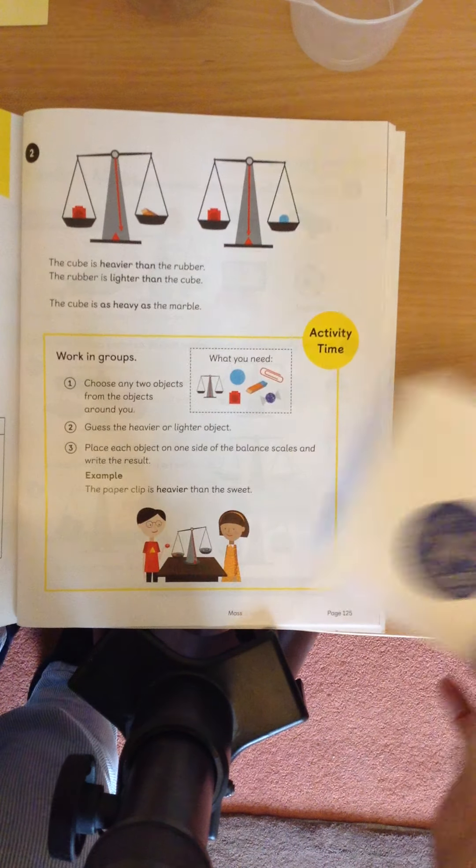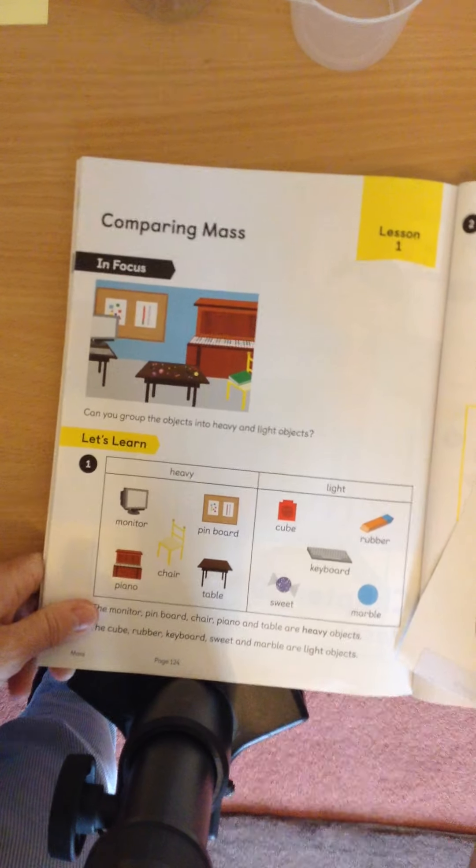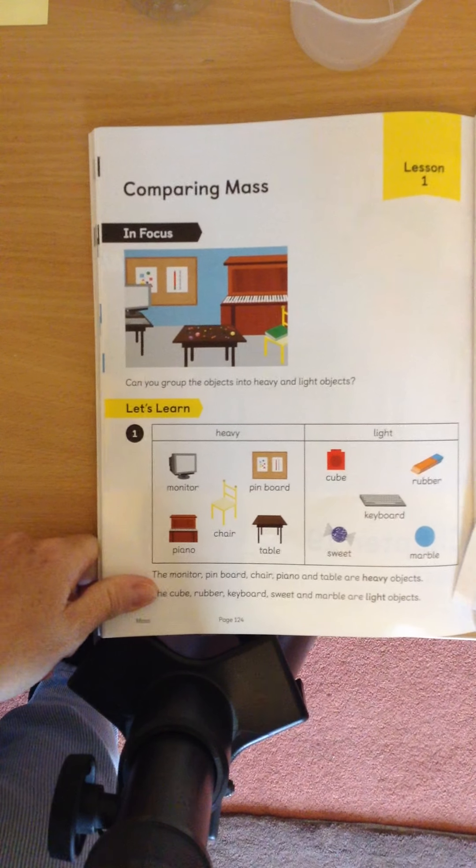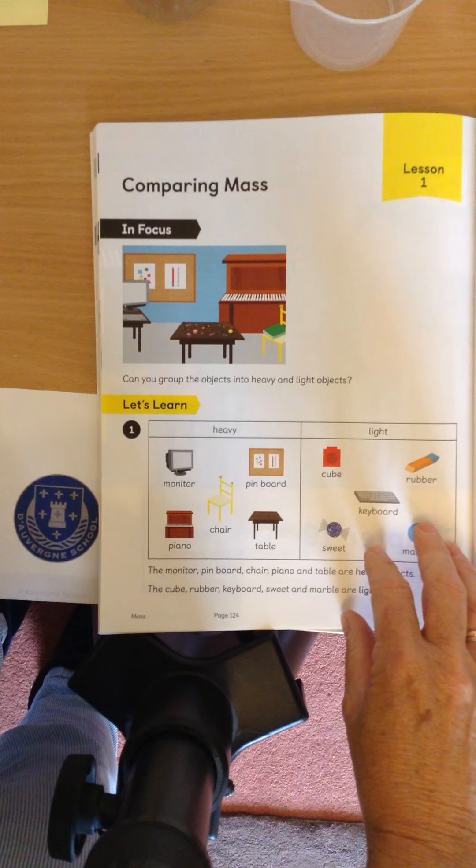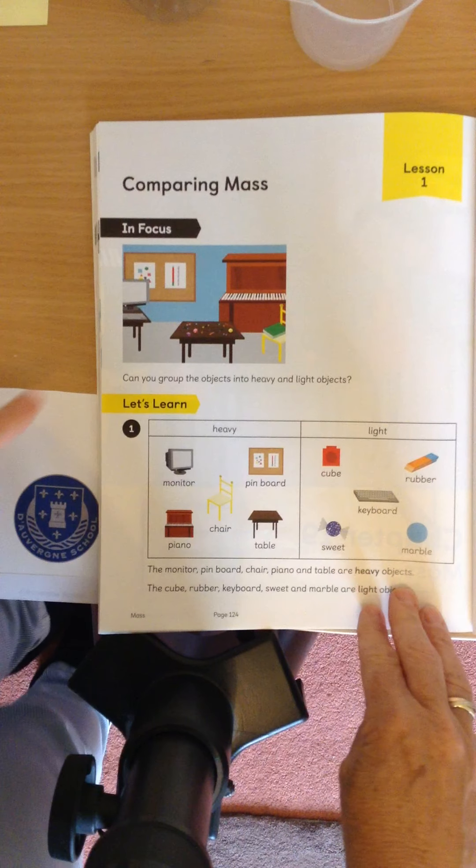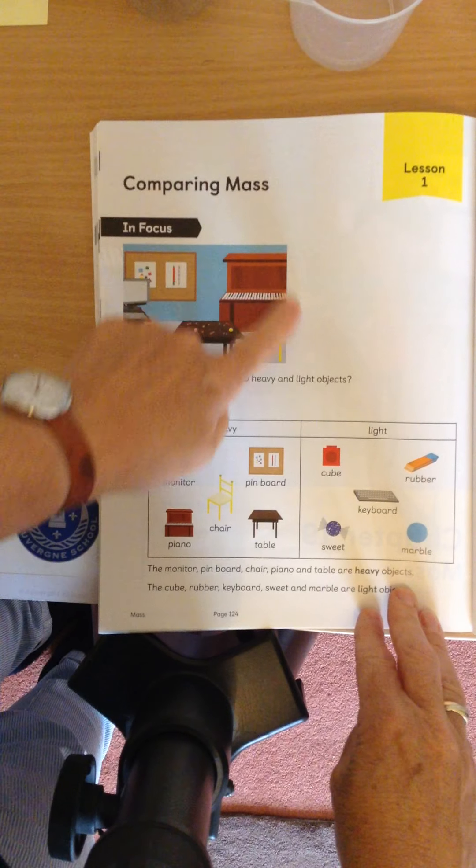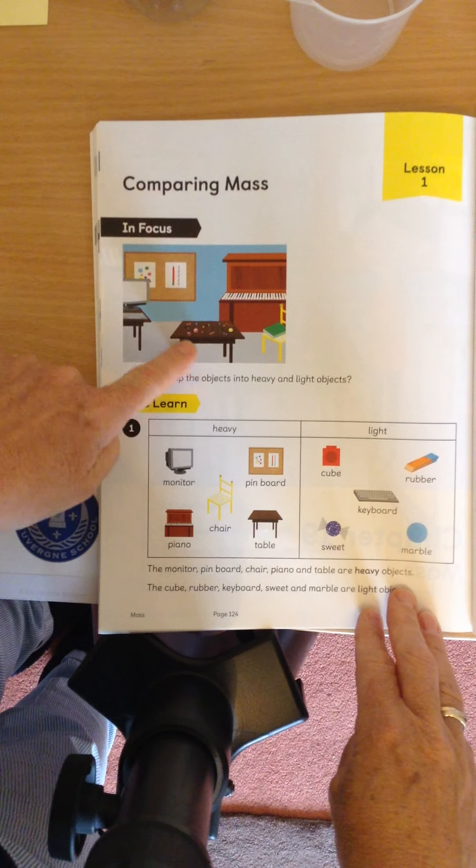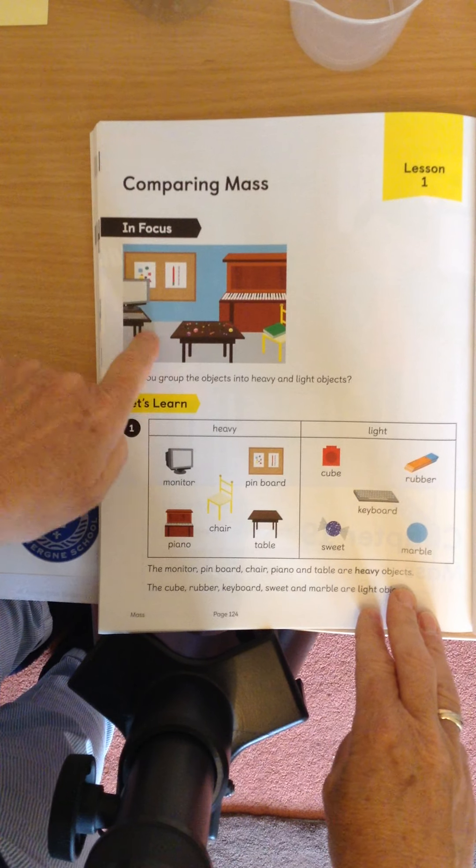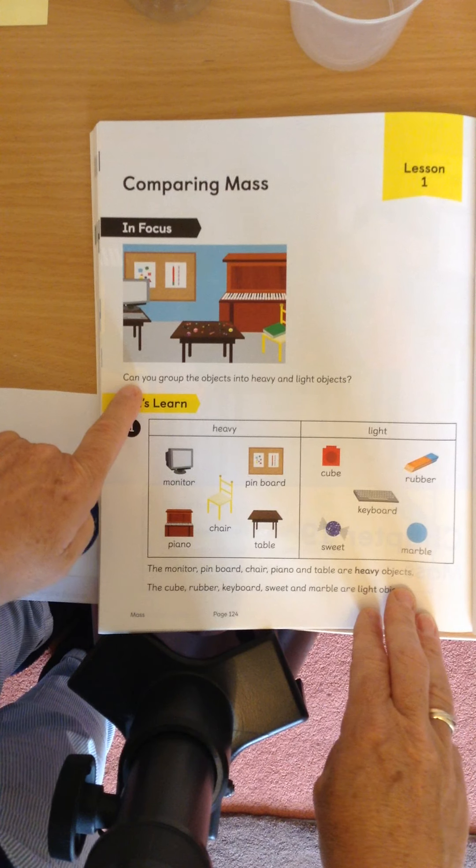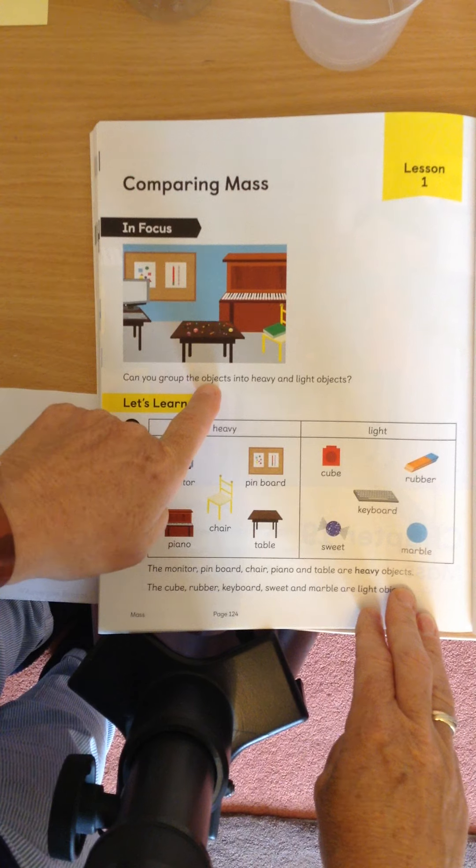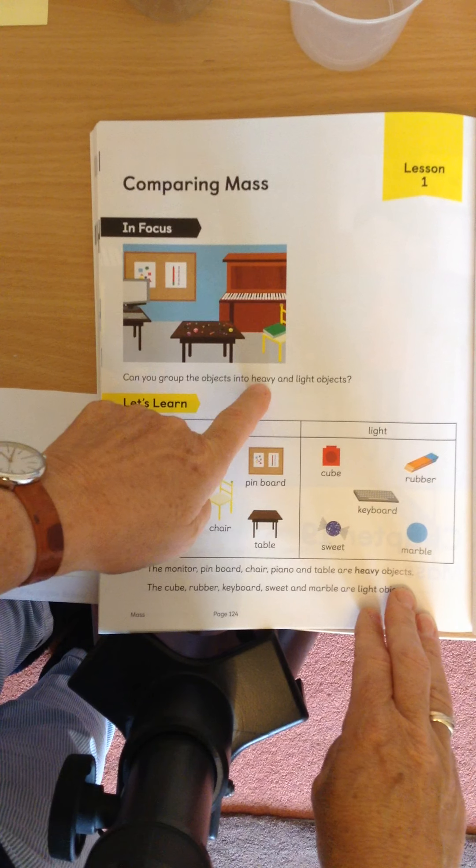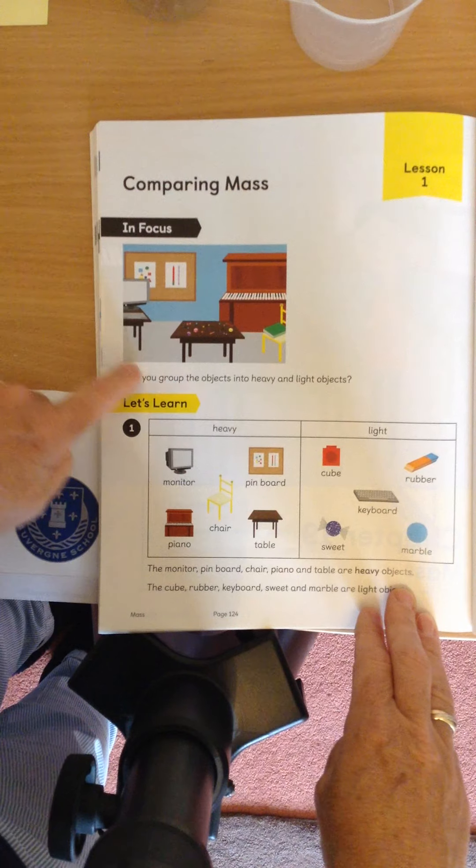Right, we're going to have a look at some objects today. And perhaps you can do this at home using different things. Because we're comparing mass, we're comparing what is heavy and what is light. And in this picture, on the table and around all the objects, we're looking at all the different things. And it says, can you group the objects into heavy and light objects? So we're looking at all these pictures.